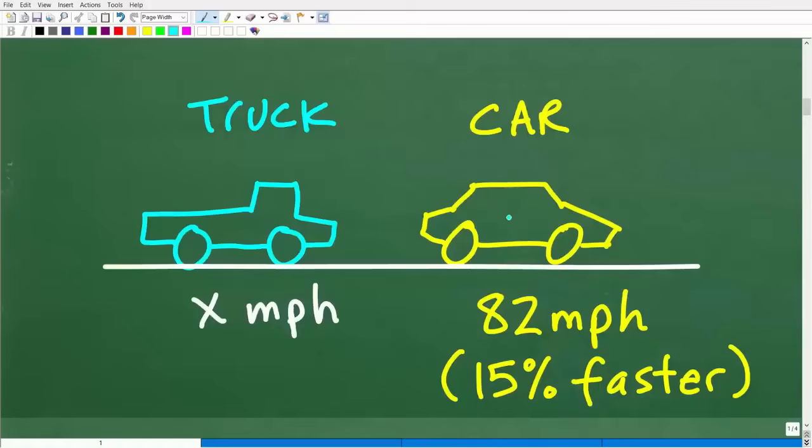So here we have this car. It's going faster than a truck. And the car is going 82 miles per hour. And the truck is going, well, we don't know, X miles per hour. But we do know that the car speed is 15% faster than the truck. So the objective here is to figure out the truck's speed.